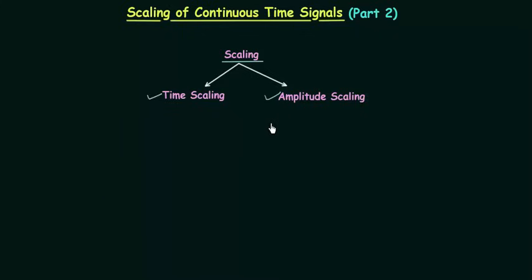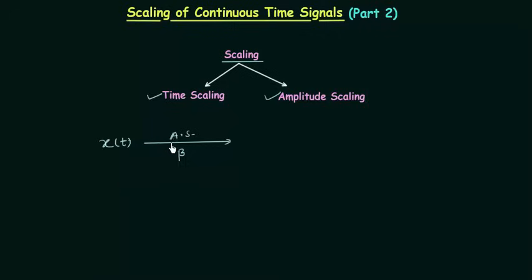We multiply the amplitude of a signal by a real number. Let's say the original signal is x(t) and we perform amplitude scaling by multiplying β, where β is a real number, to the amplitude of x(t). After amplitude scaling, the new signal is y(t), which is equal to β times x(t), where β is a real number.